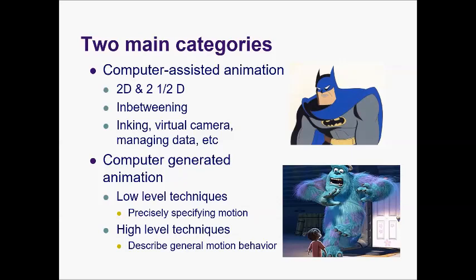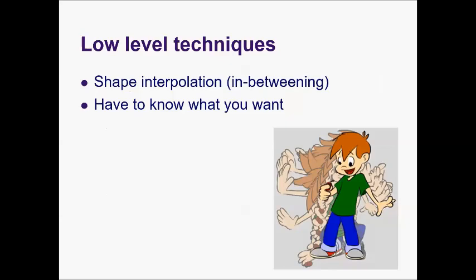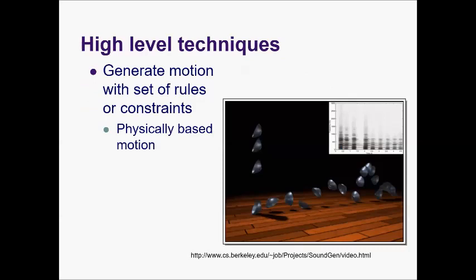The low-level techniques include shape interpolation and in-betweening, where there is a transition showing a boy in movement. The high-level techniques generate motion using a set of rules or constraints, and it is physically based on motion.